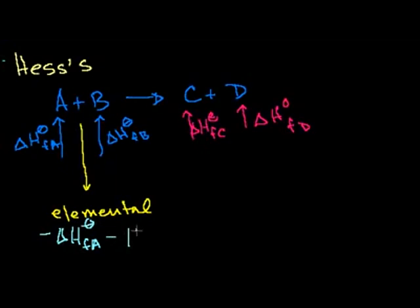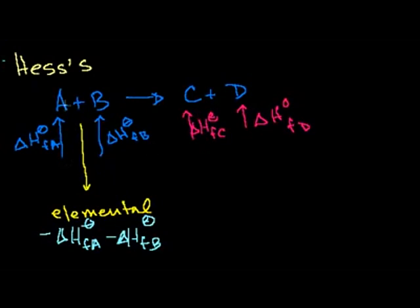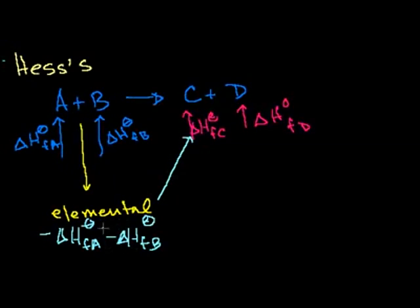It would also be minus the same thing for B. Now we can go from the elemental form back to the products, because we have the same atoms — they're just rearranging into two different sets of molecules. We know how much energy it takes to go from the elemental form to C and D: that's their heats of formation.